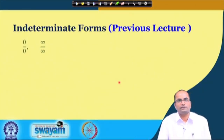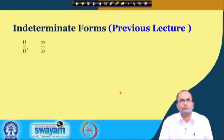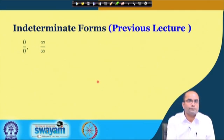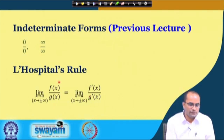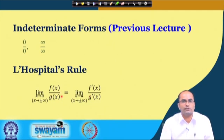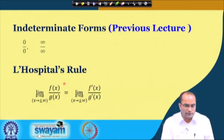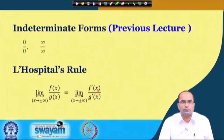Just to recall from the previous lecture, we have already discussed two indeterminate forms of the type 0/0 and infinity/infinity. There, we saw that L'Hôpital's rule was very helpful, which says that the limit of the ratio f/g, where f and g both either go to 0 or both go to infinity, equals the limit of the ratio of their derivatives.